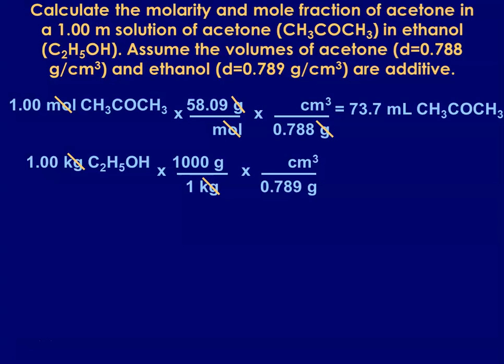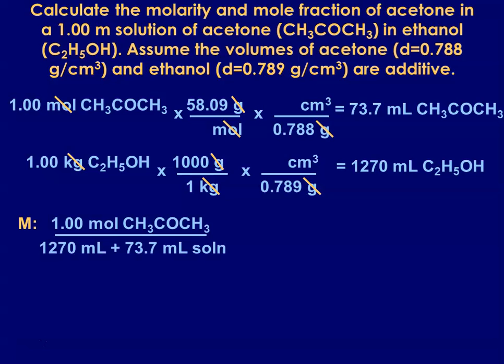When we do those conversions through and account for the density, we get 1270 milliliters. When we add those together, we get that our volume of our solution would be 1270 plus 73.7—sorry, I'm not doing that math super well in my head right now. I think it's like 1343.7 milliliters. So molarity would be the moles of our solute over the volume of our solution once we convert it to liters. And that would give us a molarity of 0.746.